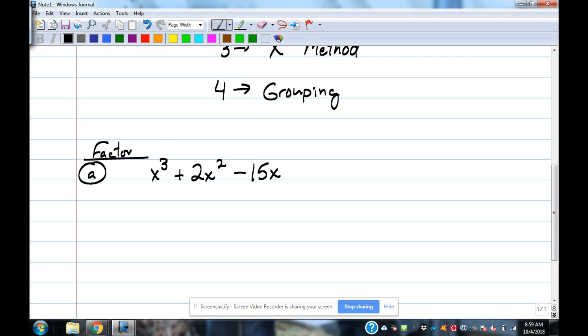GCF would be the next step. It's in descending order: x cubed, x squared, plain x. There's no constant. So GCF would be the next thing.